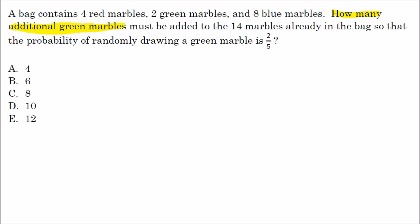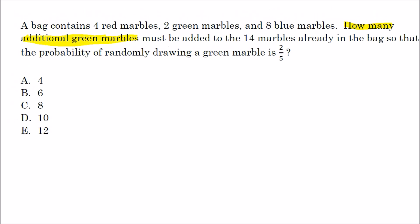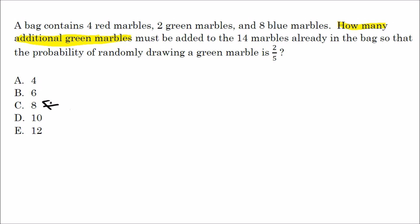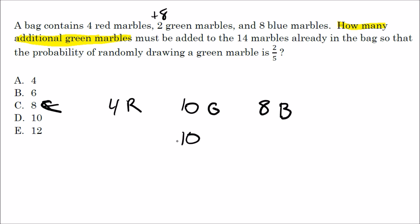What I like to do with these types of questions is start right in the middle, so I'm going to start with choice C. What if we had eight additional green marbles? Two plus eight would mean I'd have ten green marbles, still four red and eight blue. The probability of getting a green marble would be 10 out of the total — 14 plus 8 gives 22 — so 10 out of 22, which reduces to 5/11. That doesn't work because I wanted two-fifths.